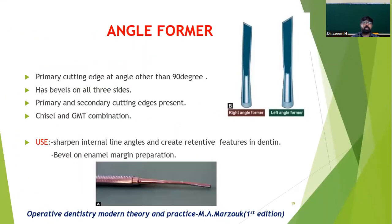The angle former is a combination of a chisel and a gingival marginal trimmer. The primary cutting edge is at an angle other than 90 degrees and has bevels on all three sides. Both primary and secondary cutting edges are present. It is mainly used to sharpen internal line angles, create retentive features in dentin, and give beveled enamel margin preparations.